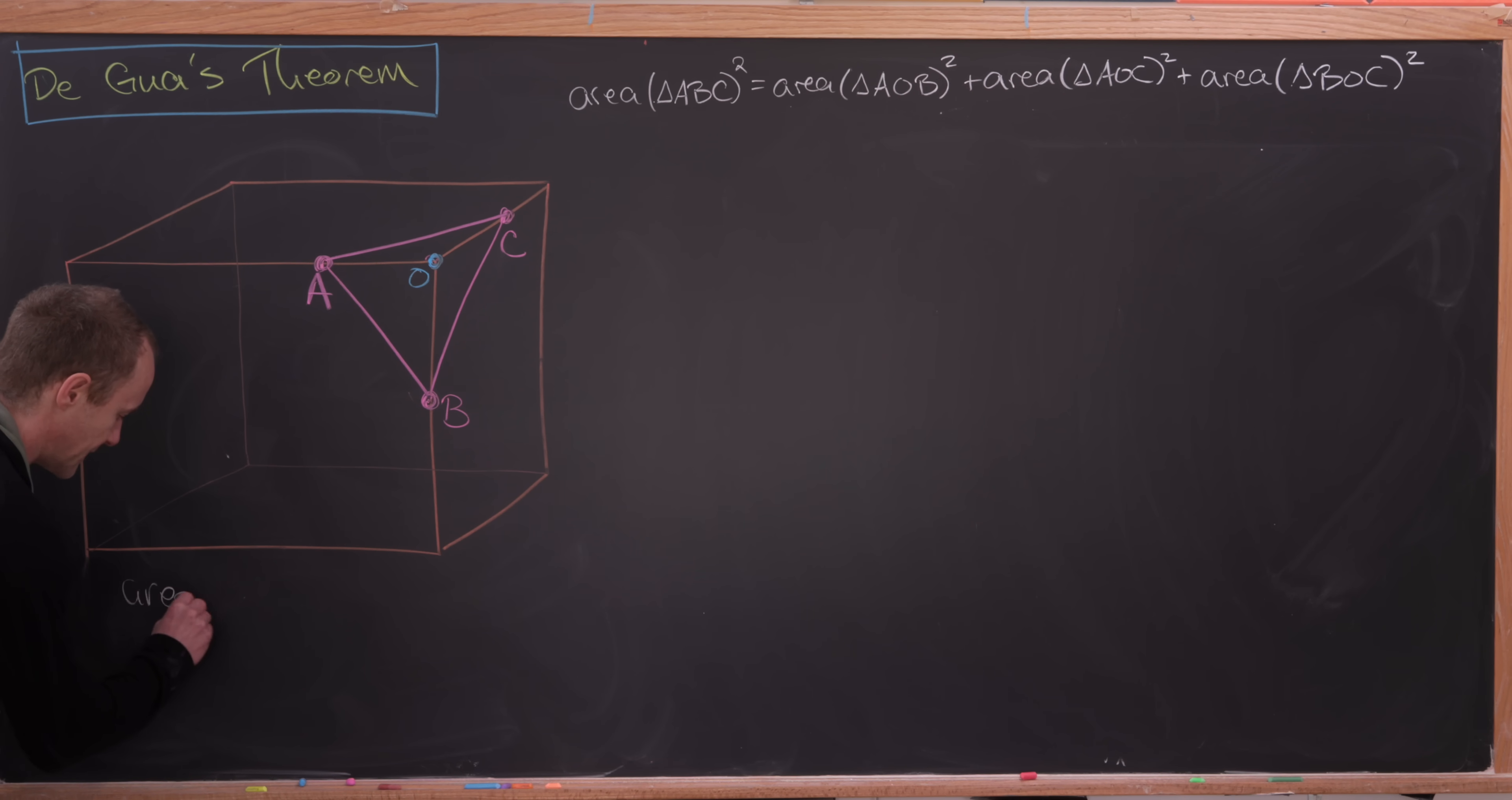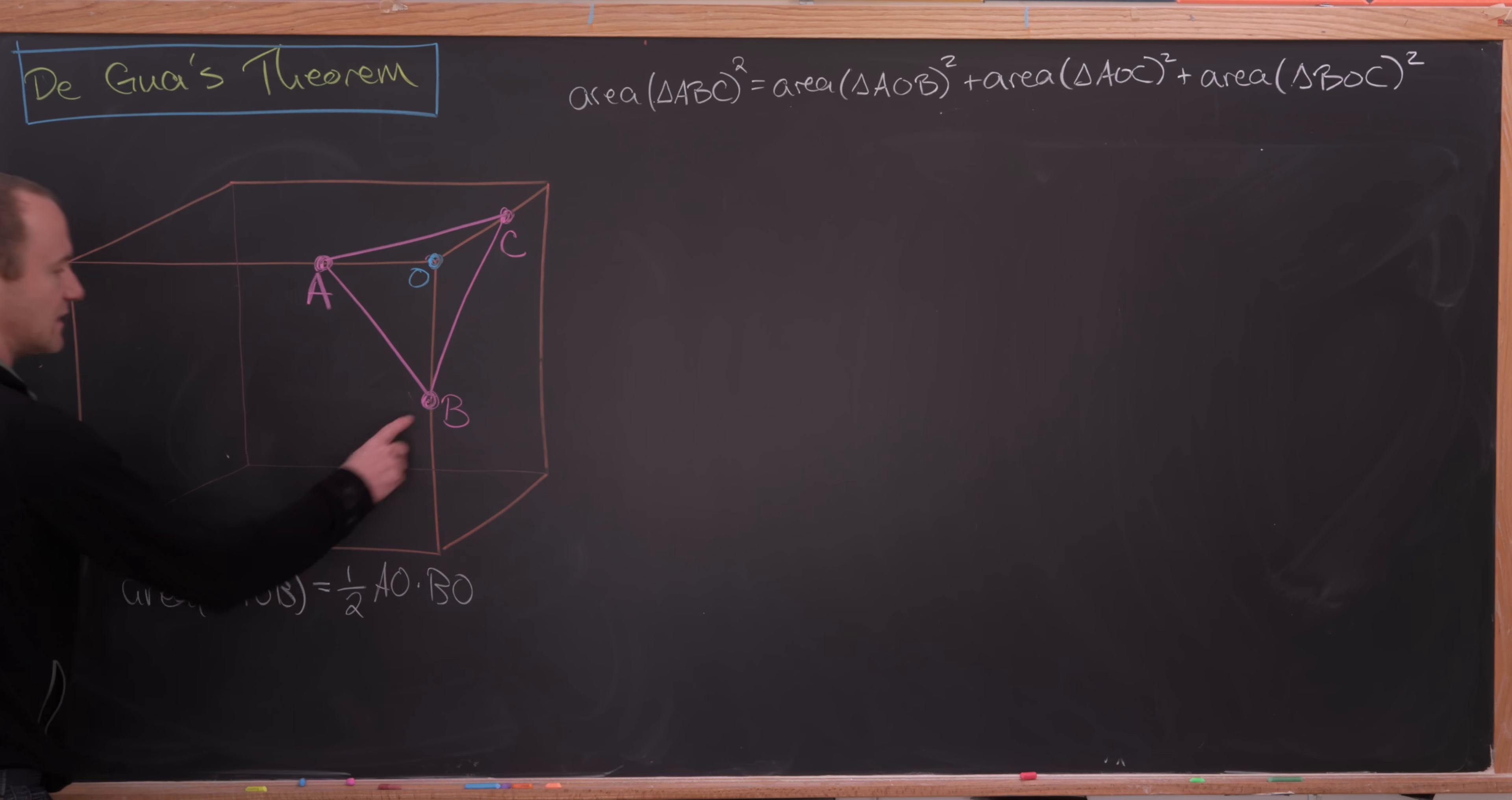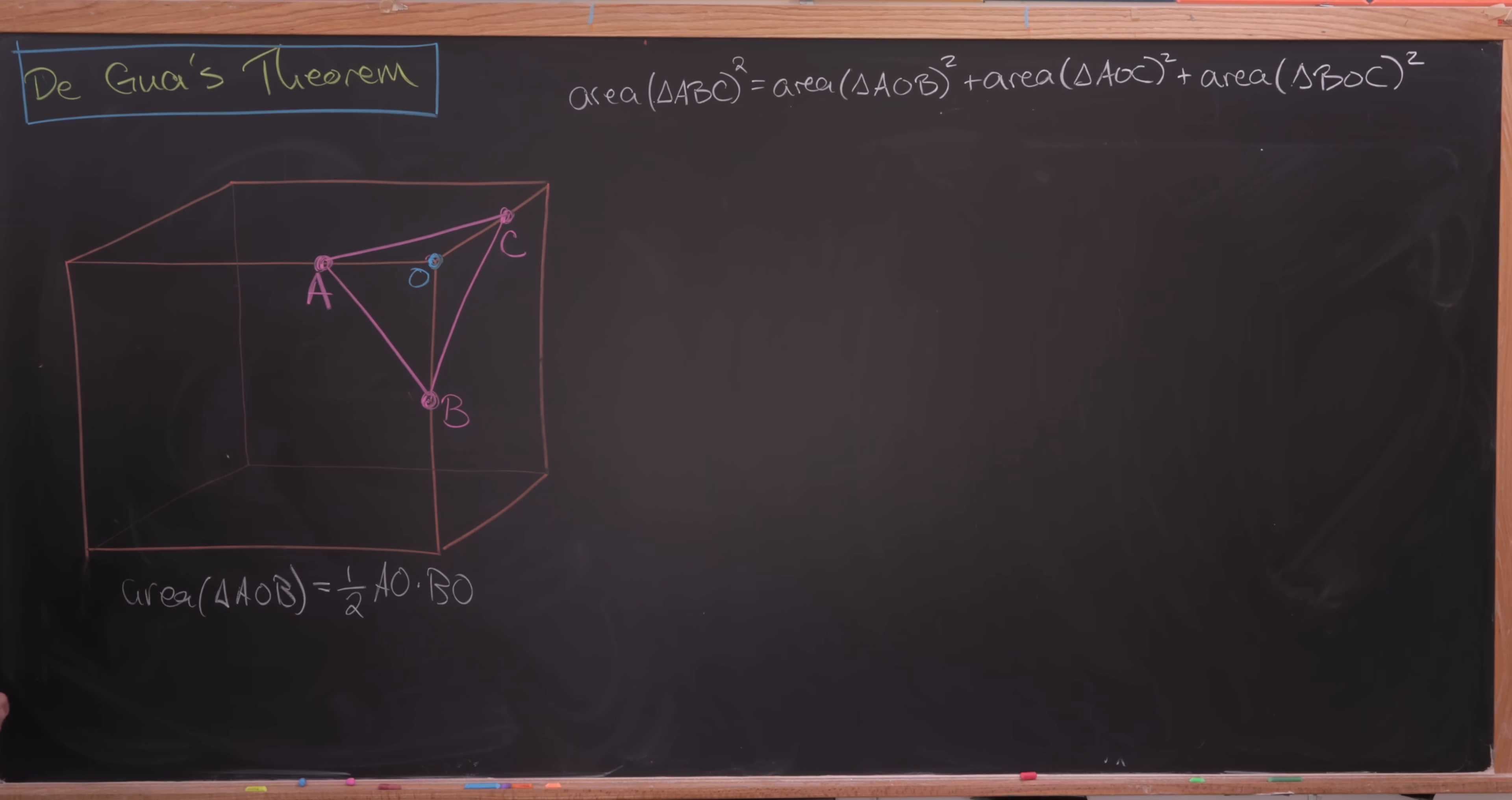So for example, the area of triangle AOB, well, that's going to be one-half base times height. But we can take the base to be the length A to O, and we can take the height to be the length B to O. So area of triangle AOB is one-half AO times BO.